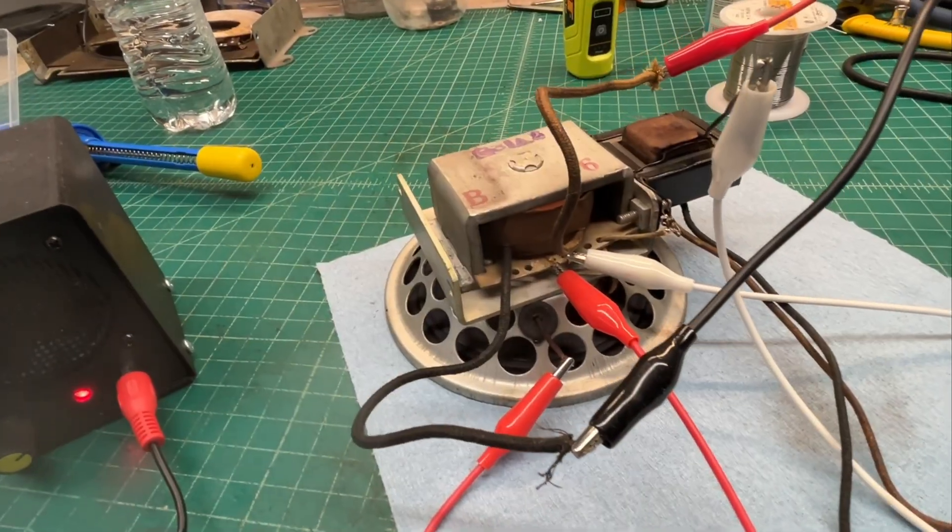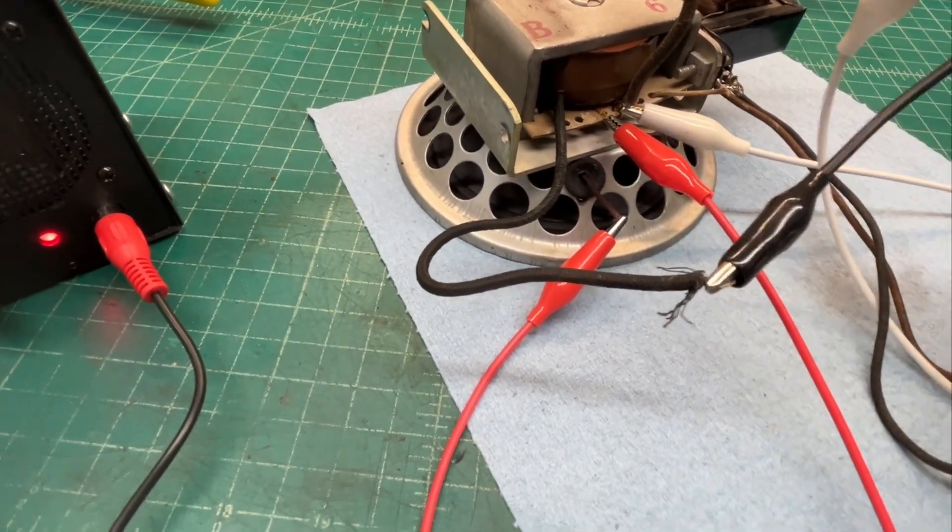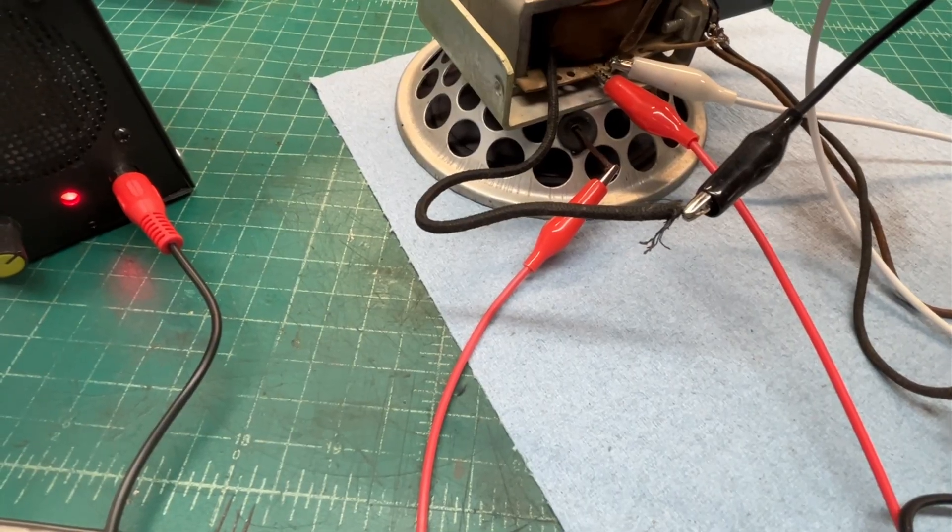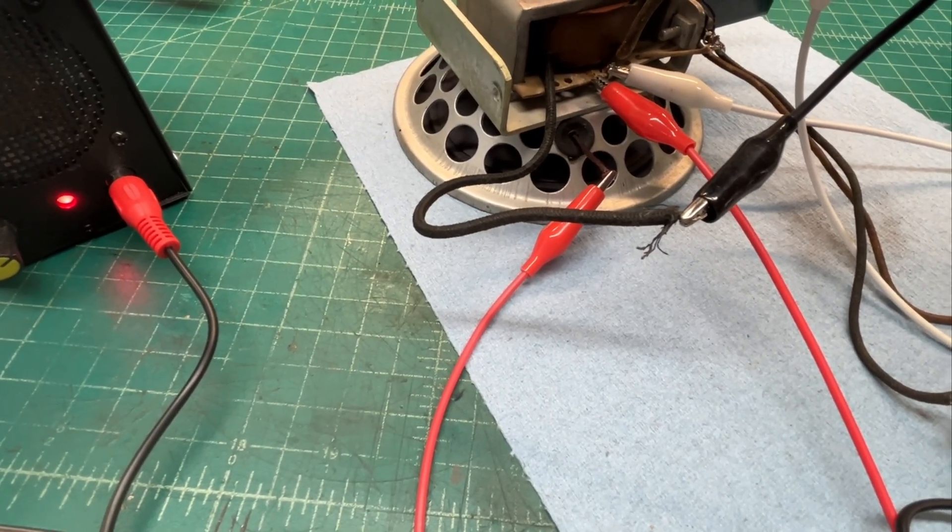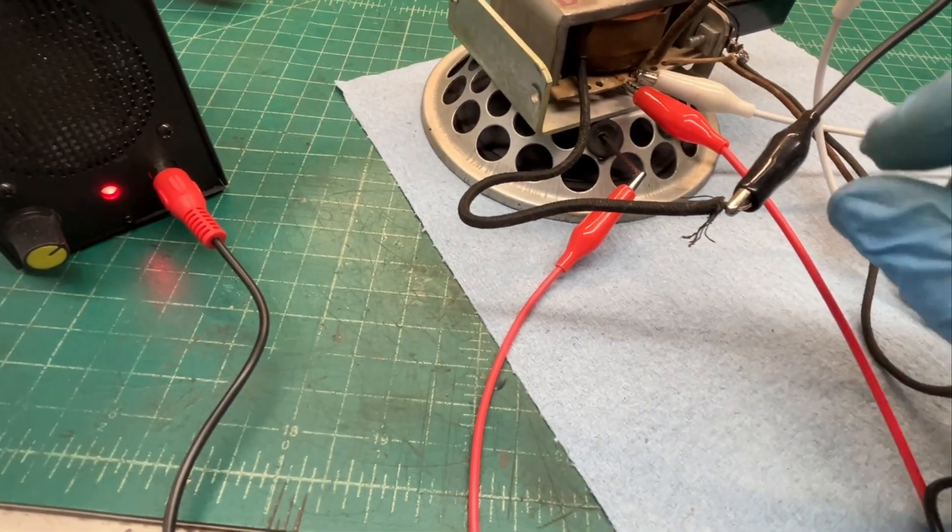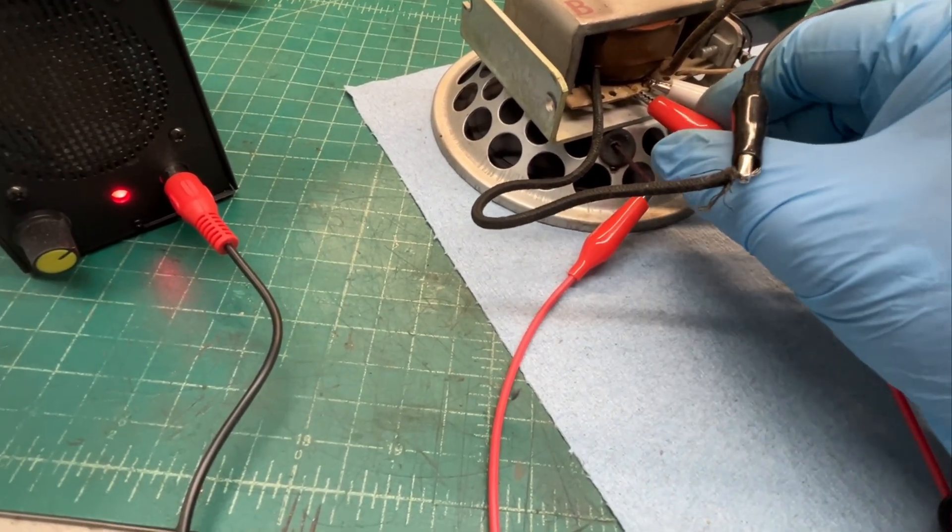And you can see the output transformer lead. The white lead attaches to one side of the humbucking coil. And if I reverse the lead going back to the voice coil from the humbucking coil.